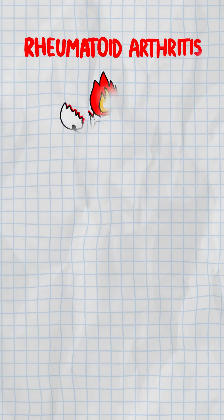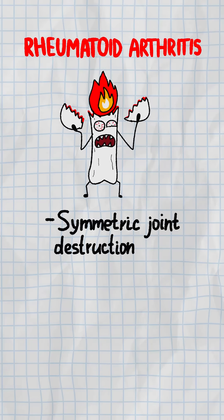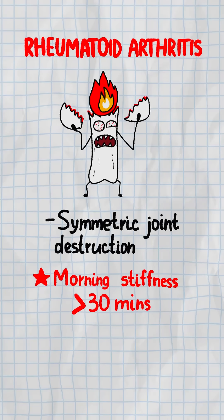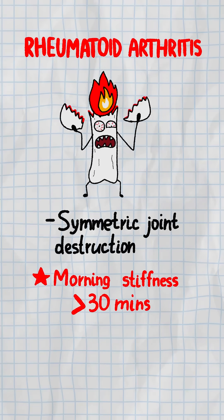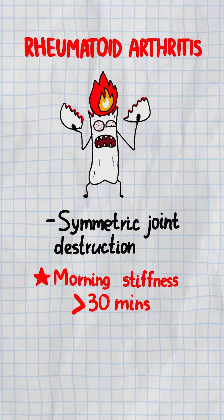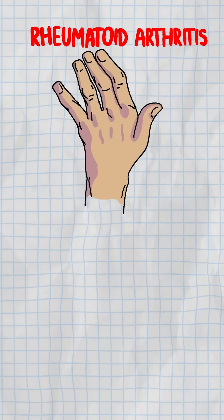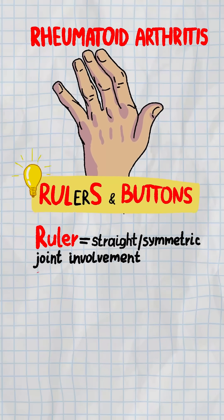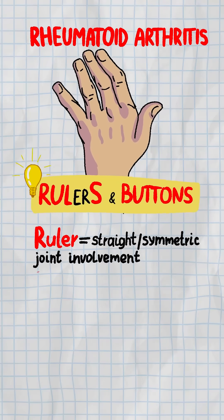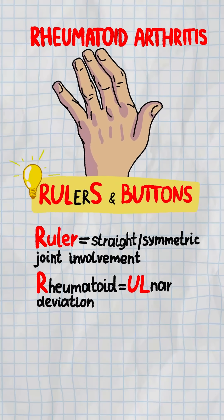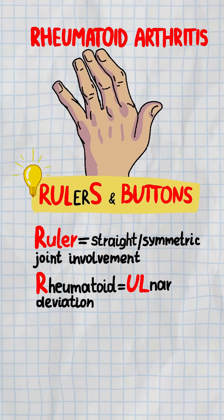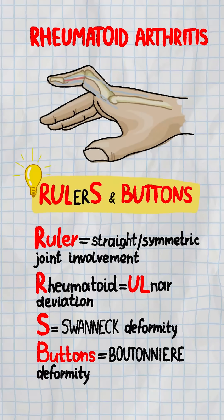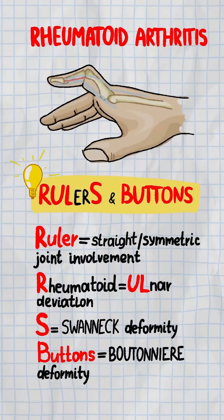Now rheumatoid — this is war. Symmetric joint destruction, morning stiffness over 30 minutes, and it starts eating your MCPs and wrists. Mnemonic: rulers and buttons. Ruler signifies straight and symmetrical joint involvement. RUL stands for rheumatoid and ulnar deviation. S is for swan neck deformity. Buttons for boutonniere deformity.